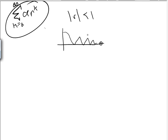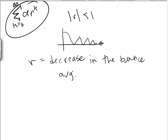So we know that there will be an actual distance that it travels. And our r is going to be the decrease in the bounce each time. We'll actually have the average of the decrease in the bounce each time.